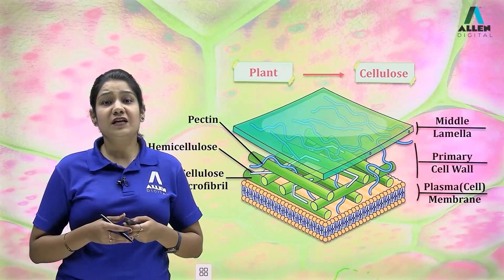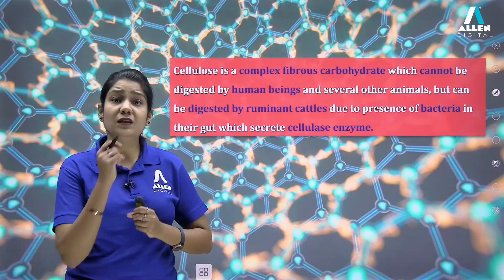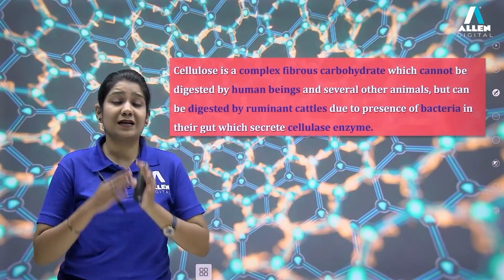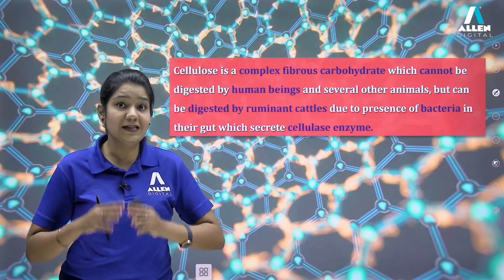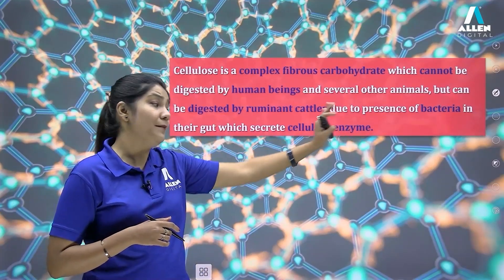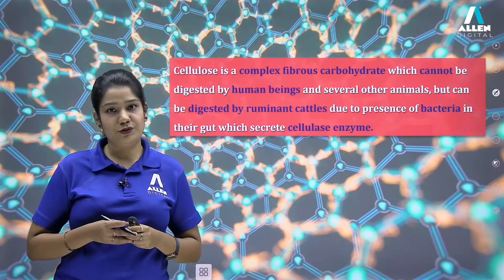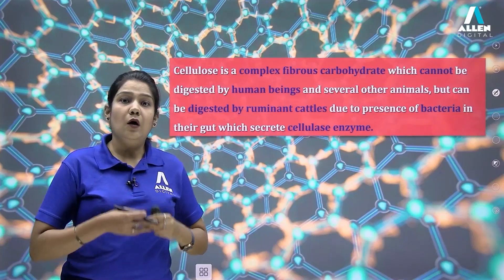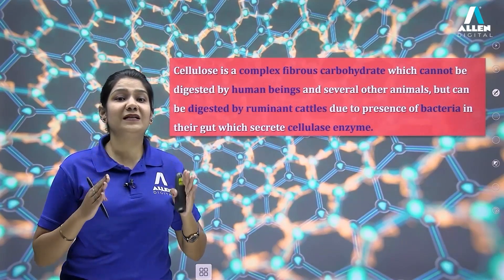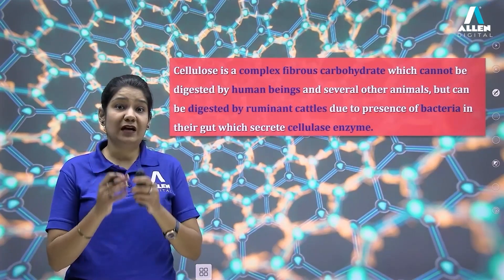Cellulose is a complex fibrous carbohydrate that cannot be digested by humans. However, it can be digested by cattle, as they have bacteria present in their stomach that secrete the enzyme cellulase to digest cellulose. Out of all the components, humans can only digest the middle lamella portion.